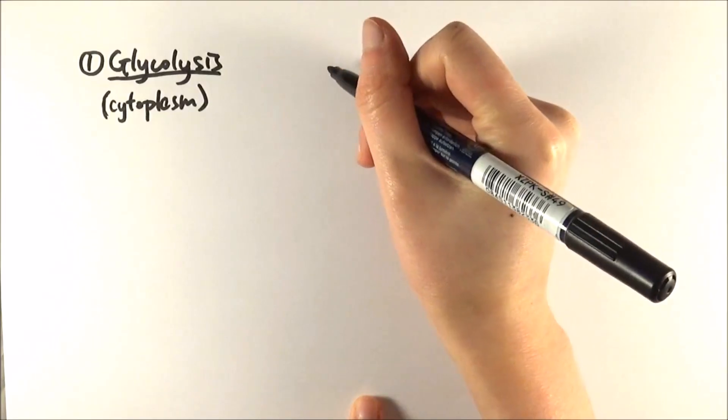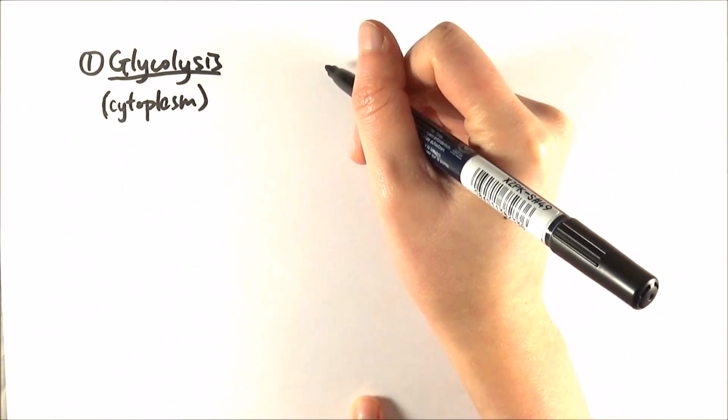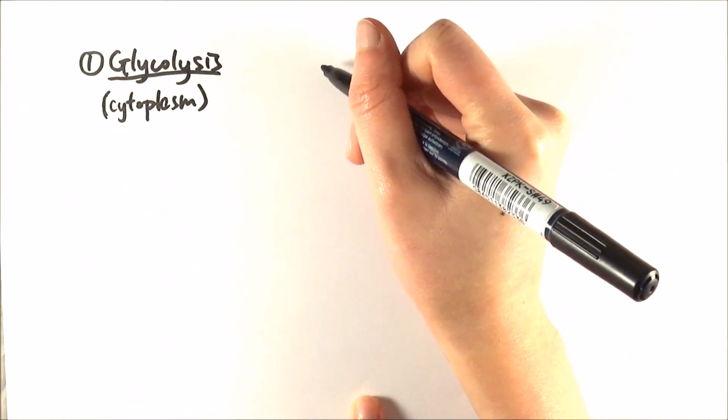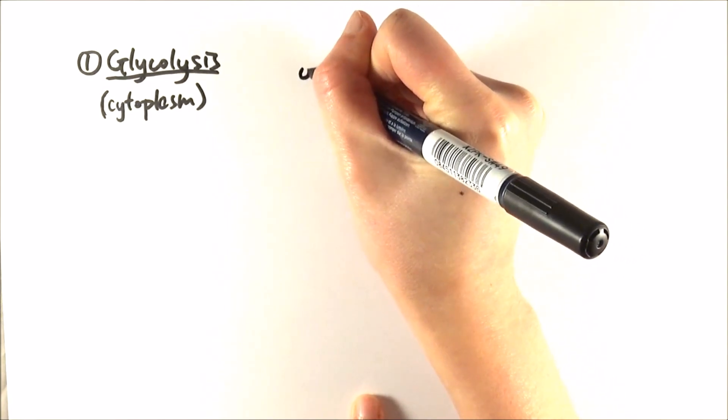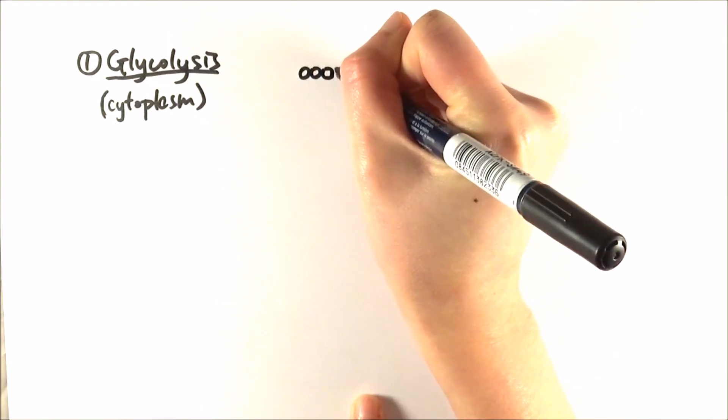We're going to start off with a glucose molecule. Glucose, as you know, is C6H12O6, meaning it is a six-carbon molecule, so I'm just going to draw six circles to represent that.